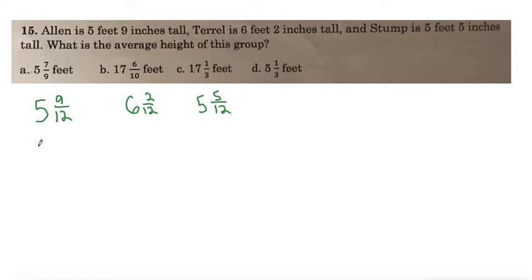So arranging these from smallest to largest, let's put the 5 and 5 twelfths first, and the 5 and 9 twelfths second, and the 6 and 2 twelfths last. So we know that it's going to be something bigger than 5 and 5 twelfths, but smaller than 6 and 2 twelfths.